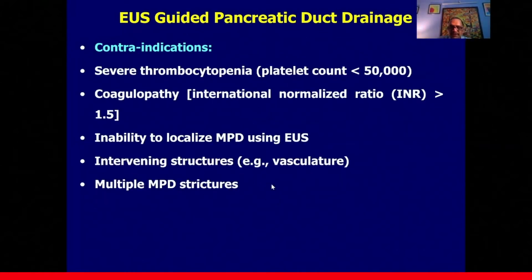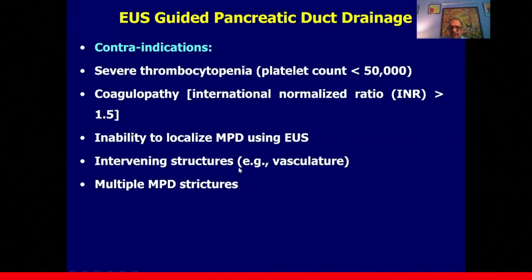Contraindications include severe thrombocytopenia, severe coagulopathy, and inability to localize the main pancreatic duct using endoscopic ultrasound. Many patients with chronic pancreatitis cannot have the main pancreatic duct localized from the stomach due to anatomical reasons, making EUS-guided drainage technically impossible. Intervening structures such as arteries or veins in the transmural tract require aborting the procedure or finding a new drainage route. Multiple pancreatic duct strictures are a relative contraindication as it is very difficult to negotiate all strictures from a single puncture site.